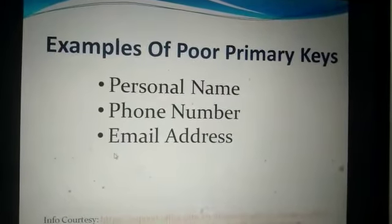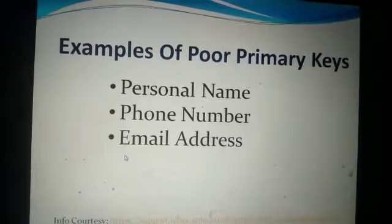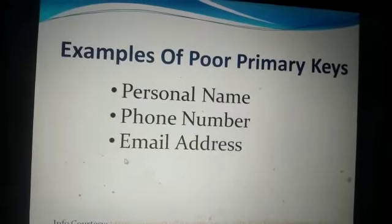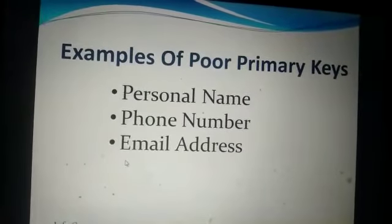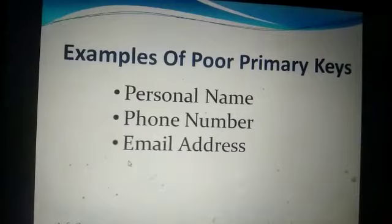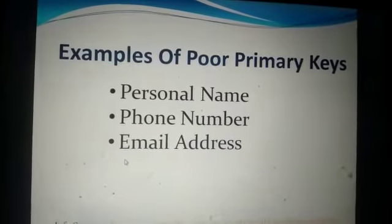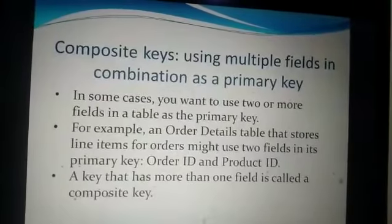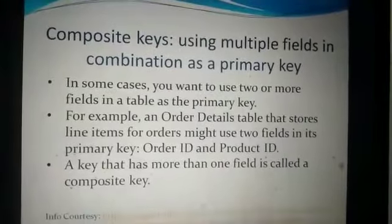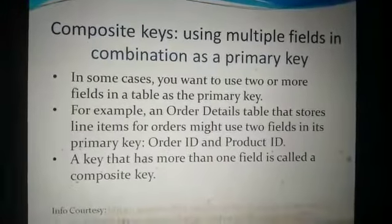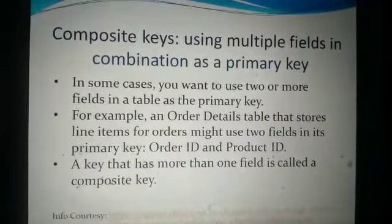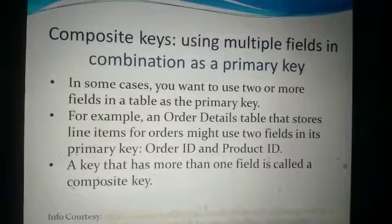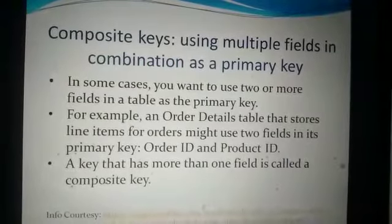Examples of poor primary keys: never allocate the personal name field as a primary key, as names can be repeated. Phone numbers can be repeated, and email addresses can be repeated. If you cannot find a single field as a primary key, you can always think of composite keys.